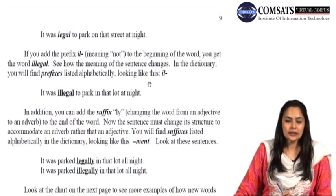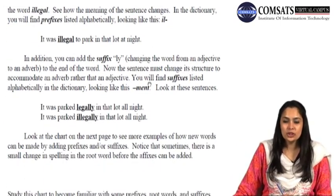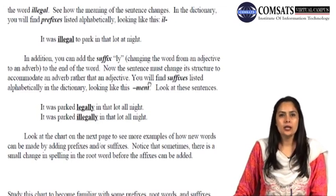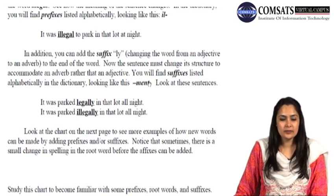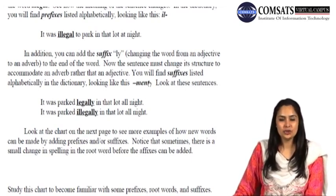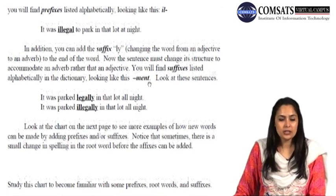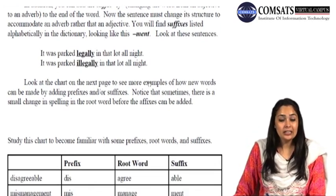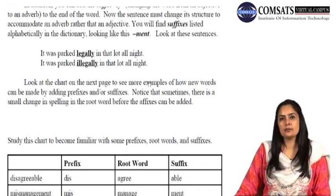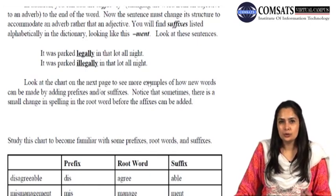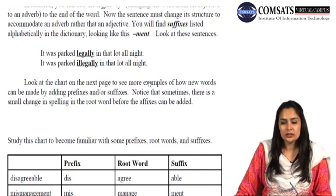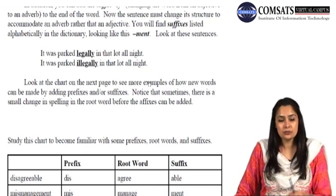In addition, you can add the suffix 'ly' — changing the word from an adjective to an adverb. When we add 'ly' at the end of a word it changes it into an adverb, and the sentence must change its structure to accommodate an adverb rather than an adjective. You will find suffixes listed alphabetically in the dictionary with a dash followed by the suffix. Look at these sentences: 'It was parked legally in that lot all night' versus 'It was parked illegally in that lot all night.' Adverbs are words that modify or tell us more about verbs. Adding 'ly' at the end has changed both the part of speech and the meaning of the word.